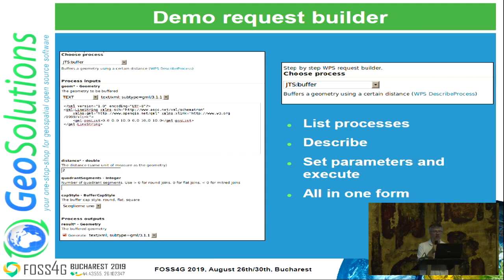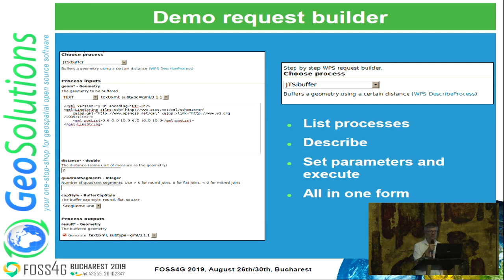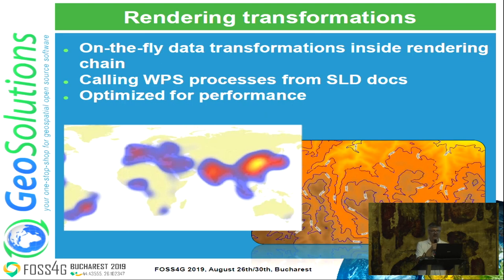In GeoServer, you also have a way to easily create a WPS request, because as you've seen from the buffer example, creating XML for a WPS simple request is not so easy. So there's a little request builder directly integrated in the GeoServer UI that you can use to generate your request on the fly with a visual interface. The real power of WPS when integrated with WMS is the ability to create so-called rendering transformations — transforming your data as you do your rendering, just by writing your process description in SLD or other styling languages.